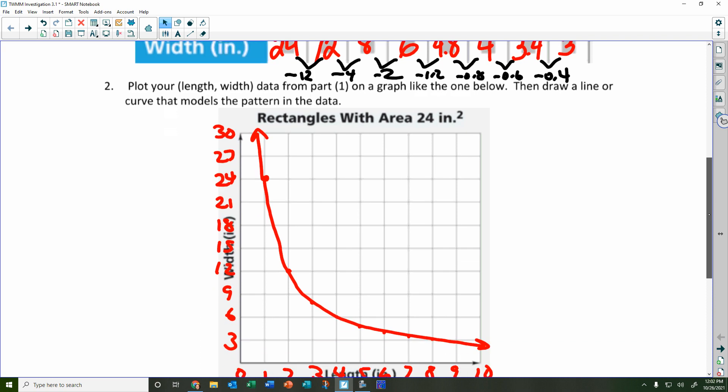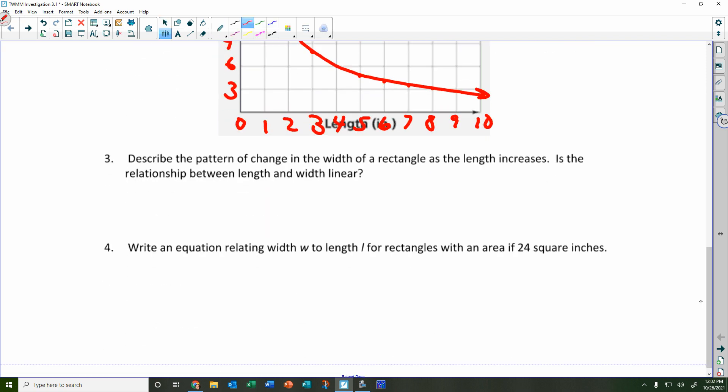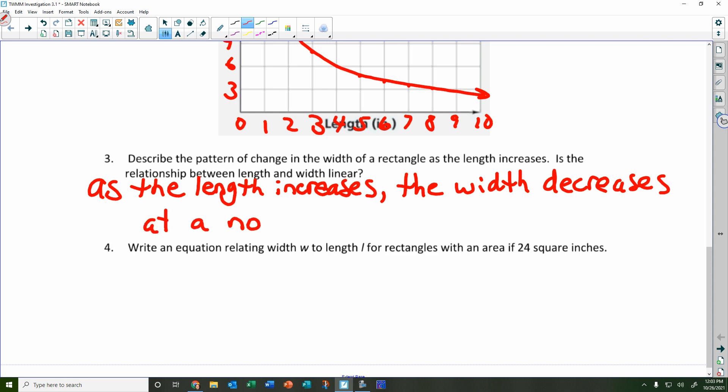Okay. So if you look, just in the table alone, that's going down 12 and then 4 and then 2. Not one of them is the same. This is 1.2, 0.8, 0.6, and 0.4. So not once does it share the same value. It's never going down by that same amount. So down here, we're asked to describe the pattern of change. So as the length increases, what happens to the width? The width decreases. And what can we add to tell everybody that this is not linear? At a non-constant rate of change.